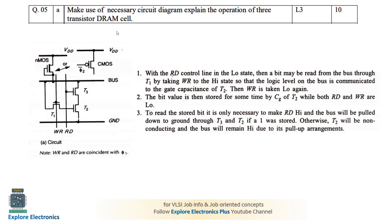The question is on DRAM — we need to explain the three-transistor based DRAM cell. In this circuit you can see there is an nMOS depletion transistor which works as a pull-up transistor. In the pull-down network we have three transistors T1, T2, and T3, which are responsible for storing and retrieving data. This bus is the output signal of the CMOS network and will carry the data we want to write or read.